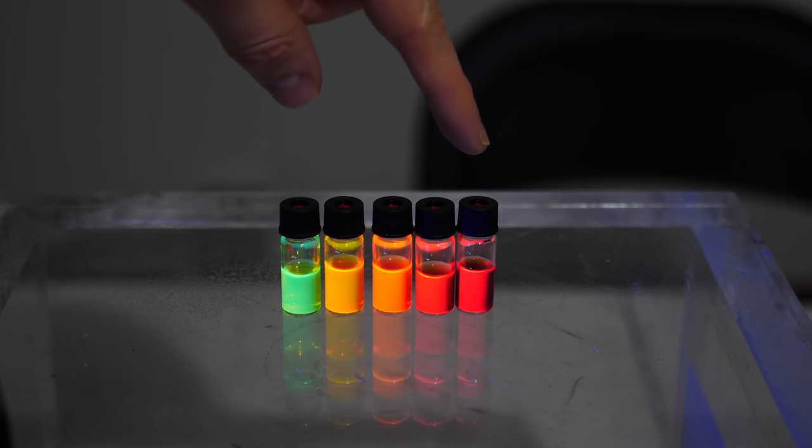So the range of cadmium telluride on this end is around six nanometers in diameter and on this end it's around two nanometers in diameter. Two nanometers, that's around the scale of molecules.